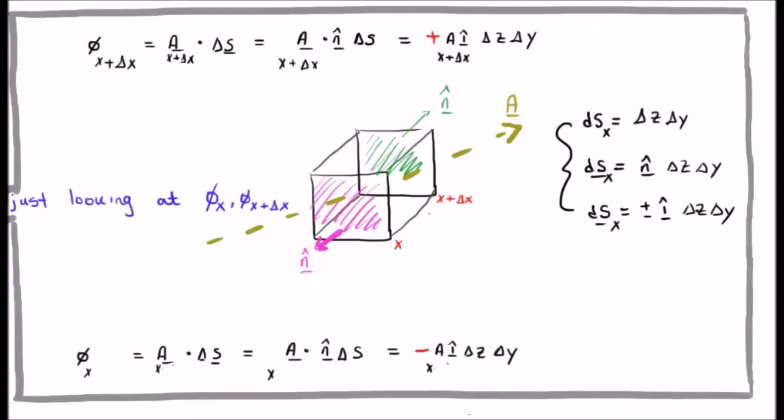The next flux we look at is at x plus delta x. Something similar happens here except this time we get plus A i hat delta z delta y at the position x plus delta x. In other words the only difference here is going to be the value of A at that particular position. Namely A at x plus delta x and A at x.